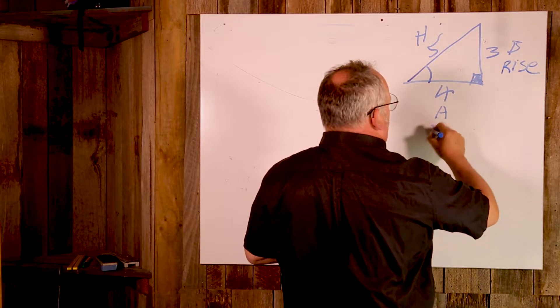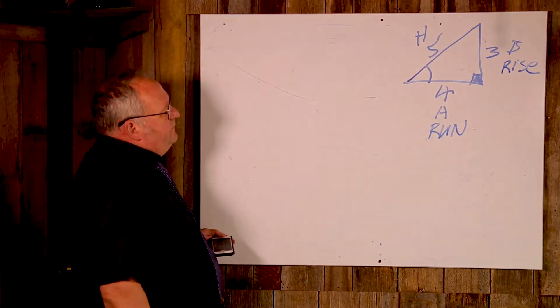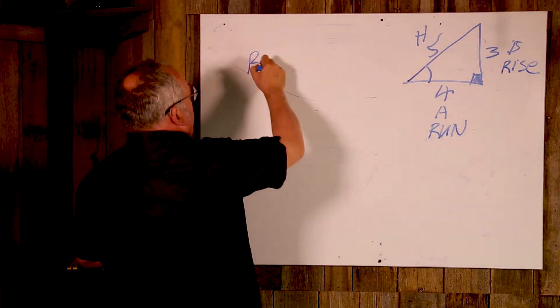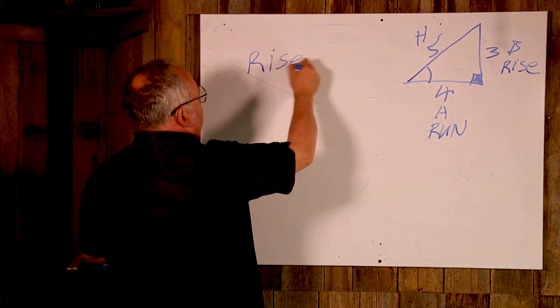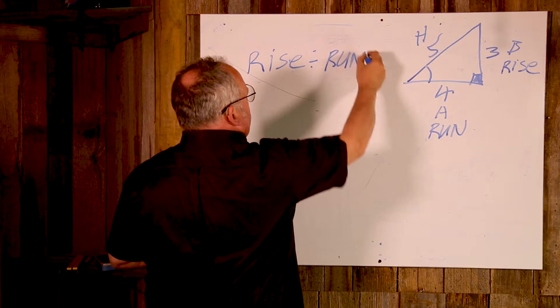And we call this one the run. The formula for it is the rise divided by the run.